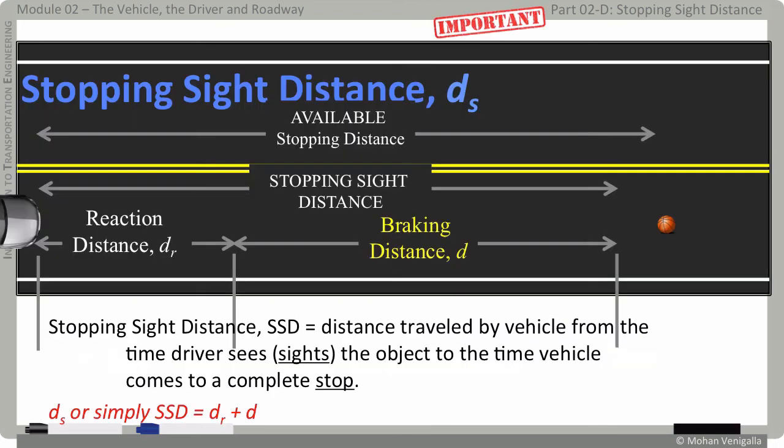Stopping sight distance, or simply SSD, is the distance traveled by vehicle from the time driver sees or sights the object, to the time vehicle comes to a complete stop. And that's how the word stopping sight distance comes from, from the time driver sights to stops.